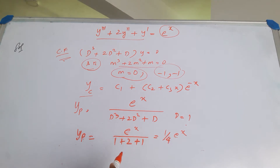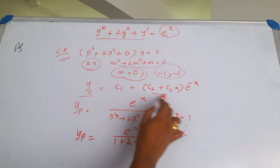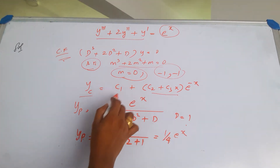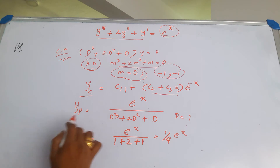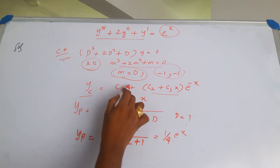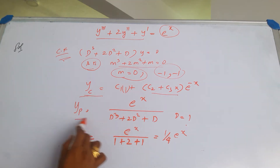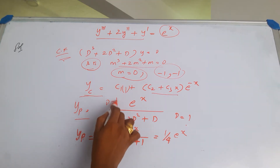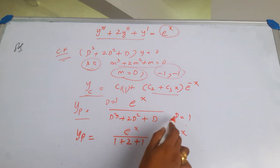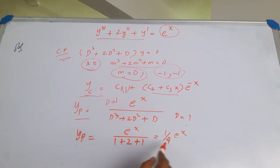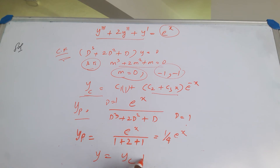The roots minus one and minus one are repeated, so we can write this accordingly. Note that e to the power of zero equals one. This gives us yc, and yp is found by substituting d as one. Therefore, y equals yc plus yp.